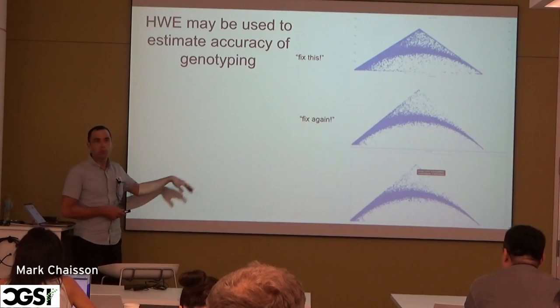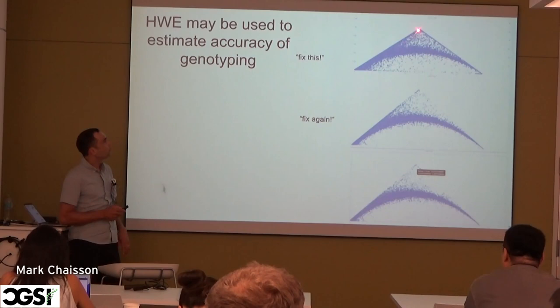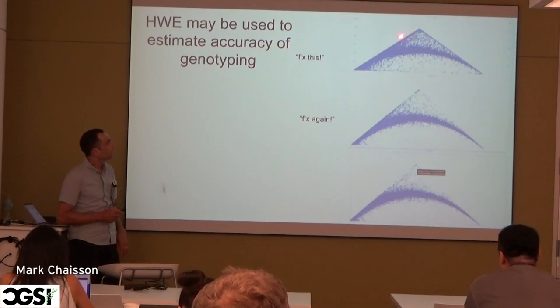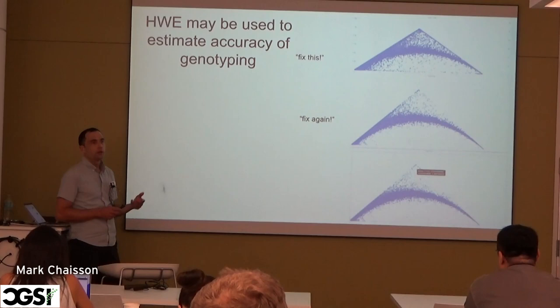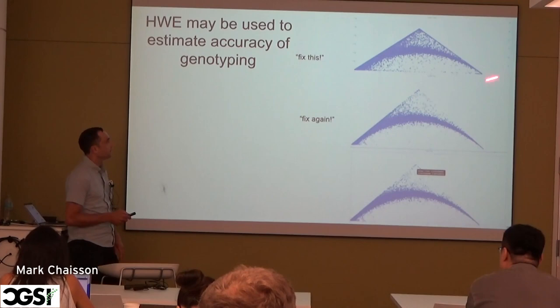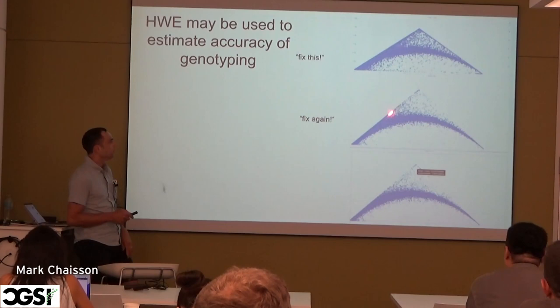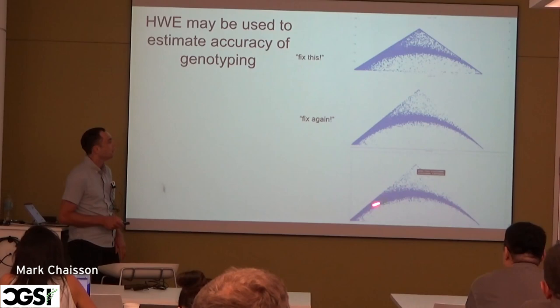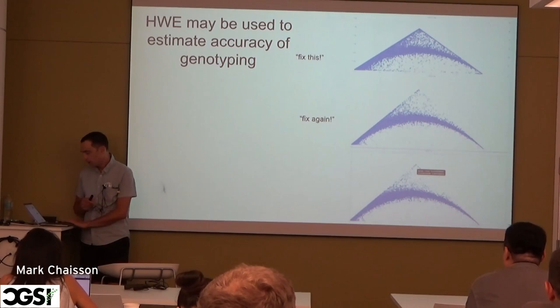This is from my student's development — when you have results off the main parabola, specifically on diagonals, that's an indication of over-calling heterozygous or homozygous events. My advising: he showed me this, I said these must be wrong, fix it. He came back with some spots removed and said he found bugs. I said nope, fix it again — and he found another bug. The current results essentially follow what's expected by population genetics.